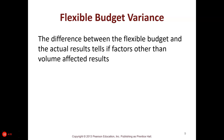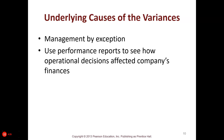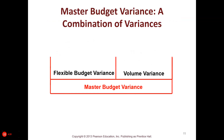The difference between the flexible budget and the actual results tells you if factors other than volume were affected. You manage by exception and use performance reports to see how operational decisions affect the company's finances. We break down the master budget variance between what had to do with flexing and what had to do with other variances.